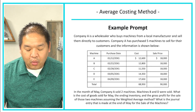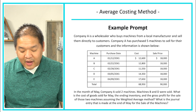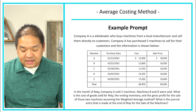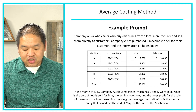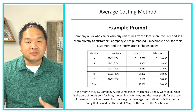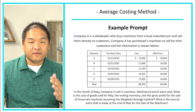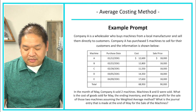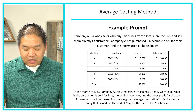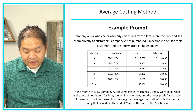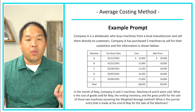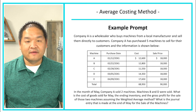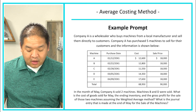Here's an example. Company A is a wholesaler who buys machines from a local manufacturer and sells them directly to customers. Company A has purchased five machines to sell, and we're assuming all machines are the same — hence they're sold for $18,000 a unit. In the month of May, Company A sold two machines: machines B and D. We need to find the cost of goods sold, ending inventory, gross profit, and journal entry for May, assuming the weighted average method.